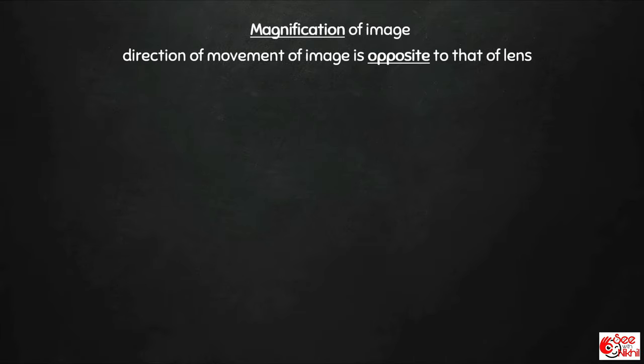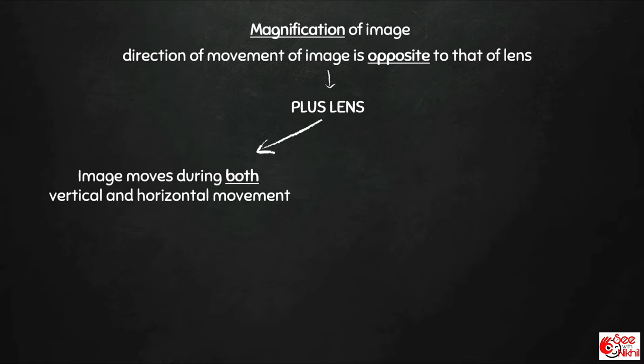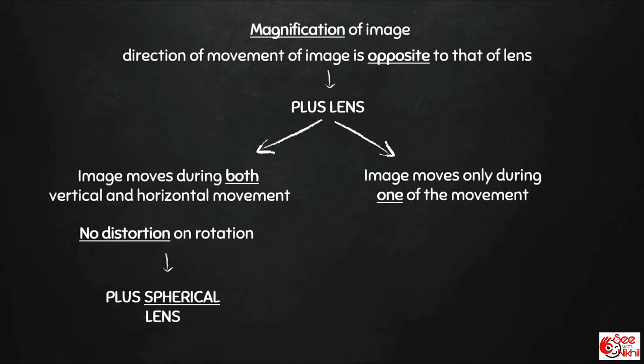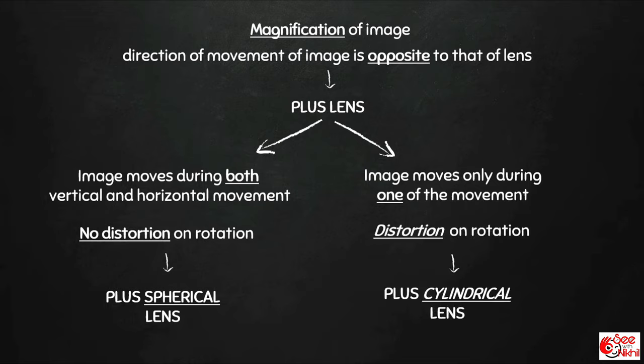If there is magnification of image and the direction of movement of the image is opposite to that of the lens, that means it's a plus lens. If the image moves during both vertical and horizontal movements and there is no distortion on rotation, that means it's a plus spherical lens. But if the image moves only during one of the movements and there is distortion on rotation, that means it's a plus cylindrical lens.